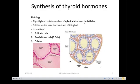The thyroid gland follicle consists of follicular cells, parafollicular cells, and the colloid. The follicular cells are where synthesis of thyroid hormones takes place, with involvement of the colloid.